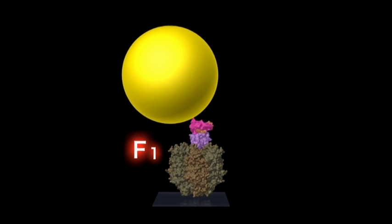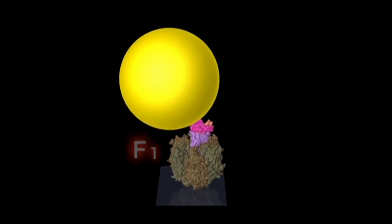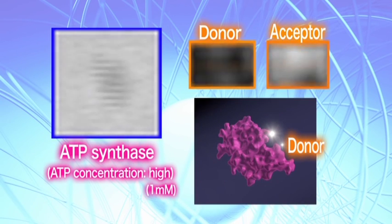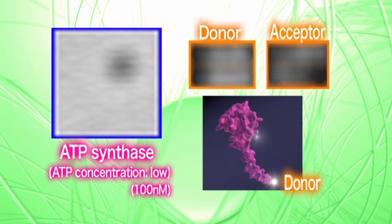To make it easier to observe, a bead is attached to the enzyme, the ATP concentration is changed, and the bead is observed from above to see how it rotates. When the ATP concentration is increased, the enzyme rotates. It is clear that the epsilon subunit is contracted because donor's light is weak. When the ATP concentration is reduced, the enzyme stops rotating, and it is now clear that the epsilon subunit is extended because donor is shining brightly.